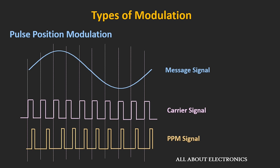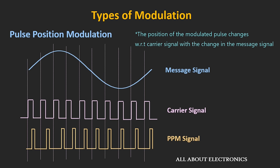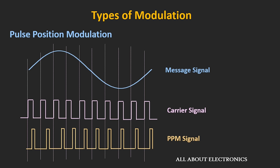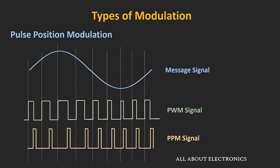In pulse position modulation, the width and amplitude of the pulse remain fixed, but the position of the modulated signal changes according to the input signal. At each rising edge, the message signal is sampled, and based on the amplitude of the input signal, the position of the modulated signal changes. As the amplitude of the input signal increases, the modulated pulse moves further away from the reference position. It can be generated by producing a pulse at every falling edge of the PWM signal.